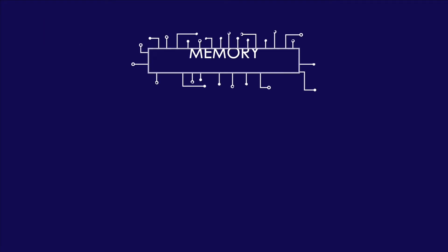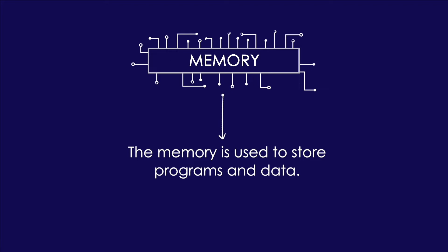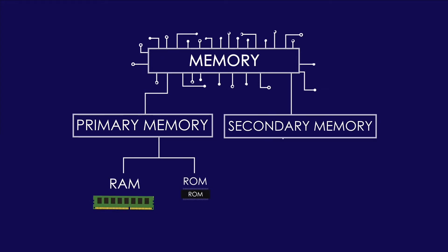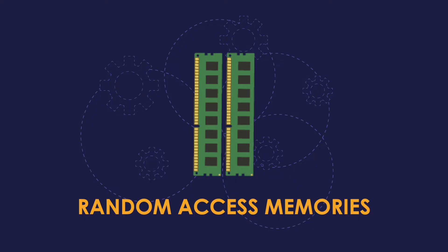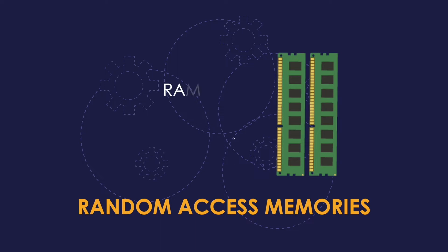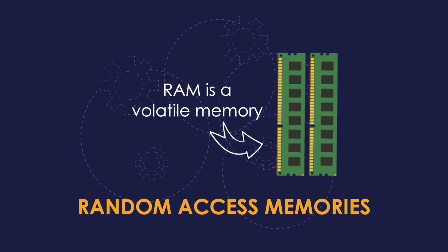Memory is just like the human brain — it can store information, events, and knowledge that we can use in the future. Similarly, the computer's memory is used to store programs and data. Computer memory has two types: primary and secondary. Under primary storage, we have random access memory and read-only memory. RAM is used to store the programs and data being used by the CPU in real time. The data on RAM can be read, written, and erased any number of times. RAM is a volatile memory, which means once the system shuts down, all data stored in the memory will be lost.